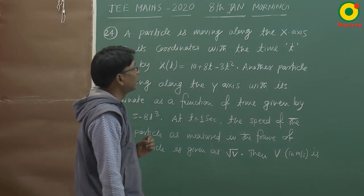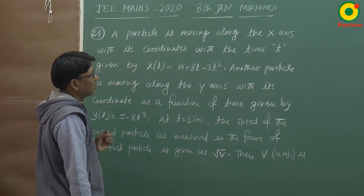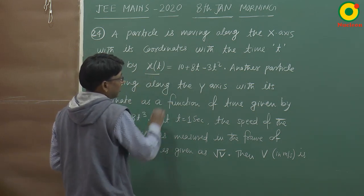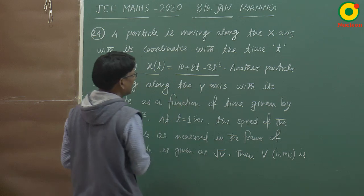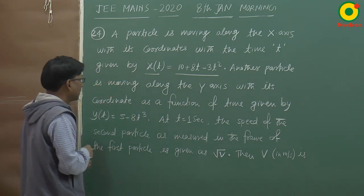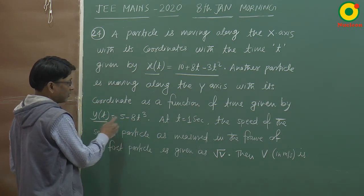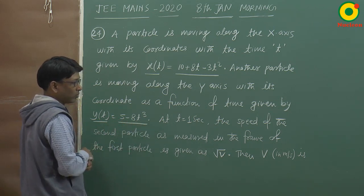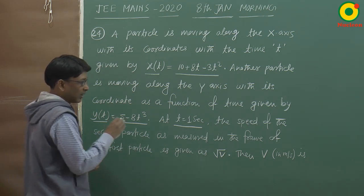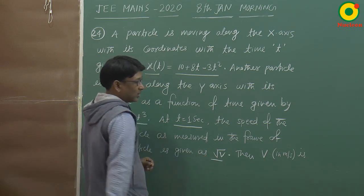A particle is moving along the x-axis with its coordinate as a function of time given by x(t) = 10 + 8t - 3t². Another particle is moving along the y-axis with its coordinate as a function of time given by y(t) = 5 - 8t³. At t = 1 second, the speed of the second particle as measured in the frame of the first particle is given as √v. Find v.